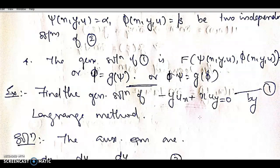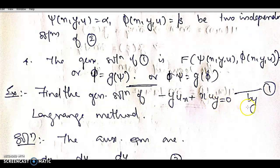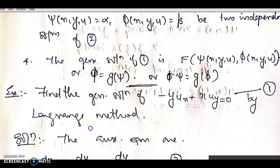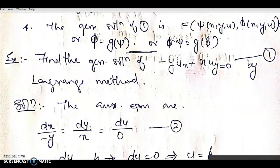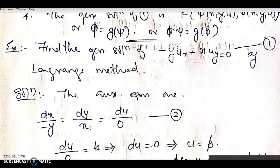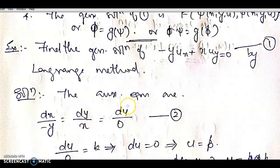Example: Find the general solution of -y·u_x + x·u_y = 0 by the Lagrange method. Solution: The Lagrange auxiliary equation is dx/(-y) = dy/x = du/0. This is equation number 2.